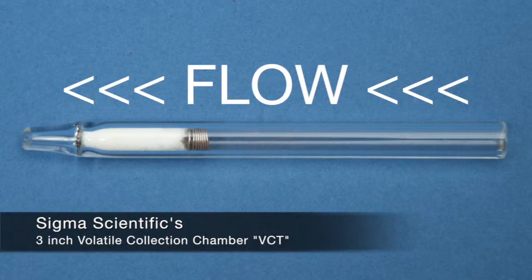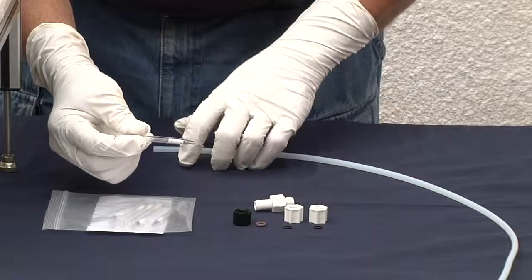A simple way to rectify this is for our airflow to flow from the large end of the VCT through our absorbent and our screen as our last part.